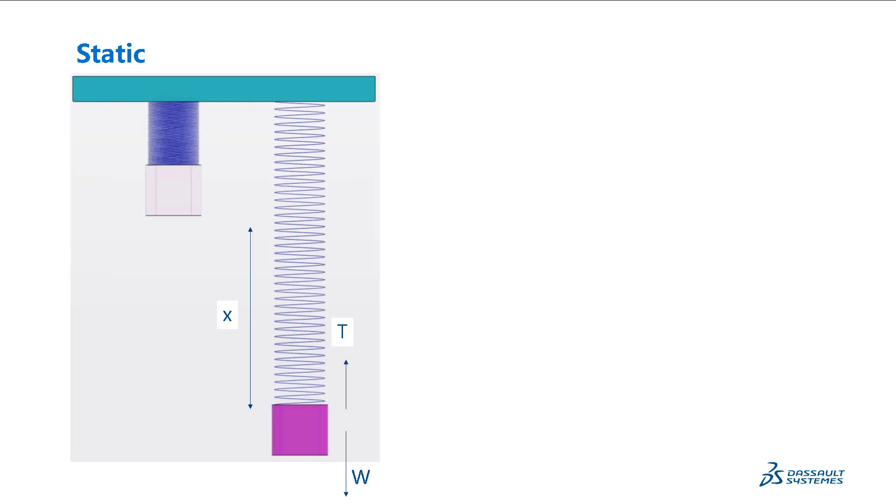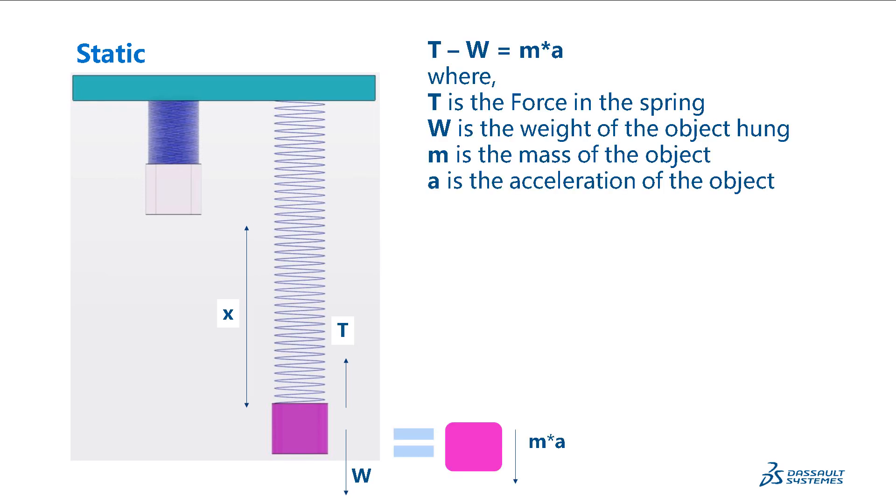Next we need to examine what we consider a static response. If we hang a weight from a spring, the spring will be elongated by some amount, x. We can use Newton's second law, f equals m times a, to describe how this system behaves.